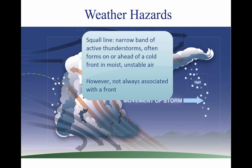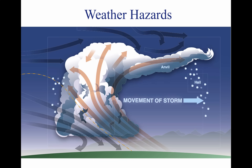A squall line is a narrow band of active thunderstorms. Often it develops on or ahead of a cold front in moist, unstable air, but it may develop in unstable air far removed from any front. The line may be too long to detour easily and too wide and severe to penetrate. It often contains steady-state thunderstorms and presents the single most intense weather hazard to aircraft. It usually forms rapidly, generally reaching maximum intensity during the late afternoon and the first few hours of darkness. The most violent thunderstorms draw air into their cloud bases with great vigor, and if the incoming air has any initial rotating motion, it often forms an extremely concentrated vortex from the surface well into the cloud.